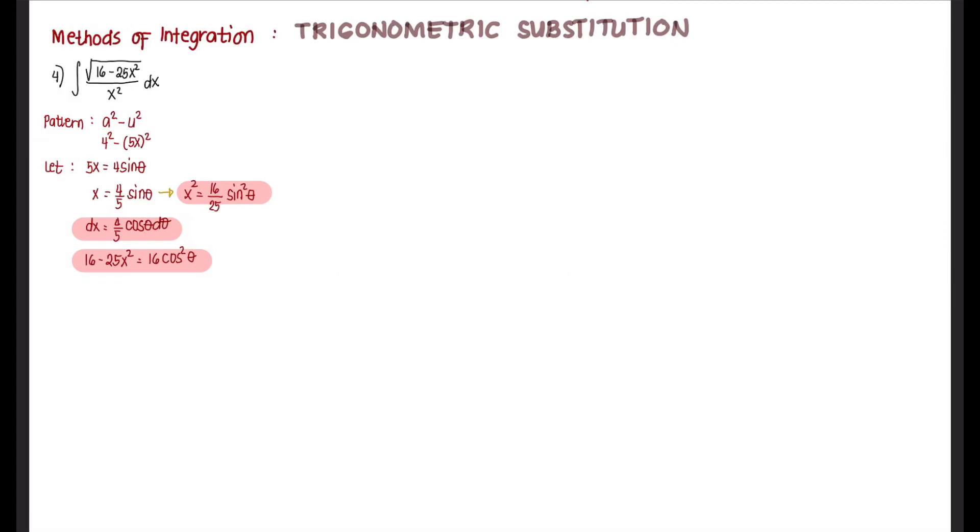These highlighted expressions we are going to use to substitute into our given. That would be the square root of 16 cosine squared of theta divided by 16 over 25 sine squared of theta.